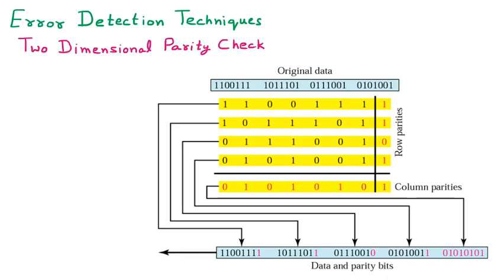The 2D parity check detects burst errors. A burst error means whenever multiple bits are corrupted. If only one bit is corrupted, we have other methods for that, but when multiple bits are corrupted, the two-dimensional parity check can easily detect such types of errors. Here we will see the combination of VRC and LRC.